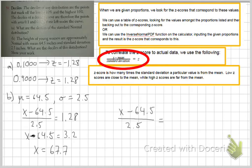which is corresponding to the bottom 10%, the only difference that we'll see is x minus 64.5 is now negative 3.2. And we end up with a height that corresponds to 61.3.